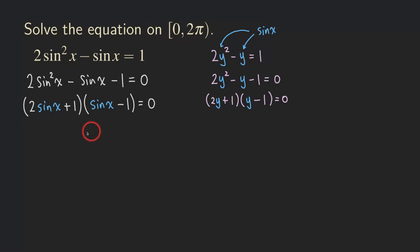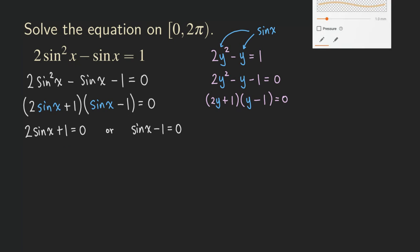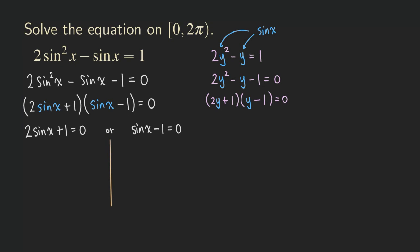We can continue solving by writing down two cases. The first case is that 2 sine x plus 1 equals 0, and the other case is that sine x minus 1 equals 0. We draw a line in the middle to separate the work so the two cases don't interfere with each other.